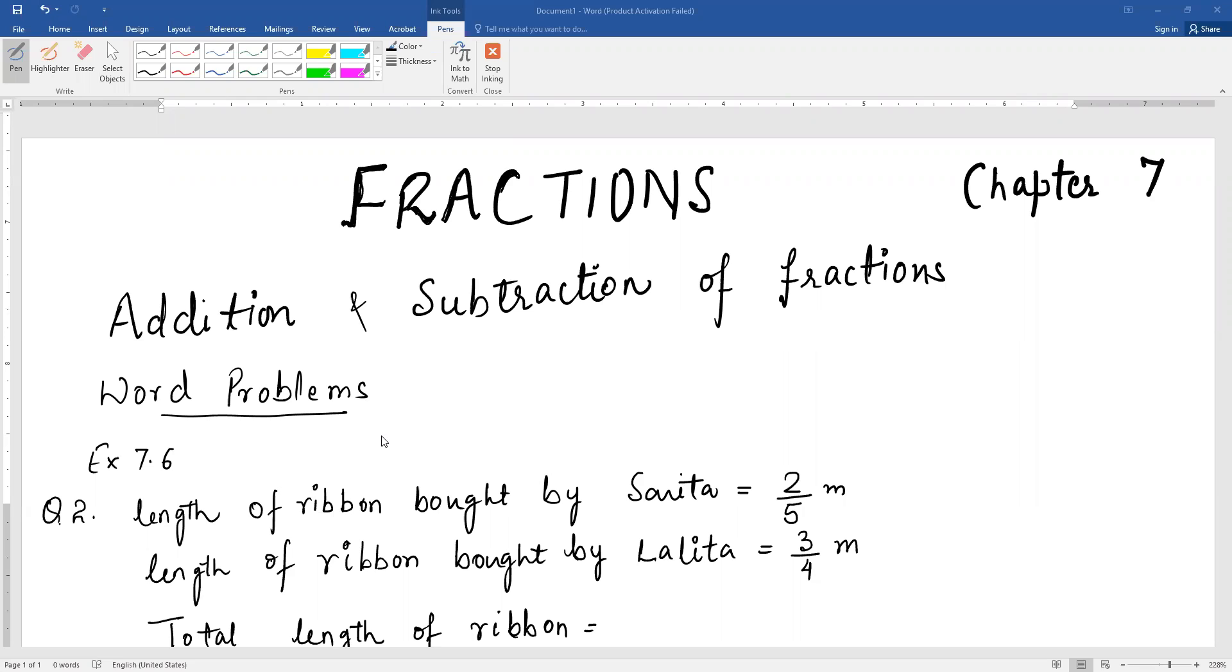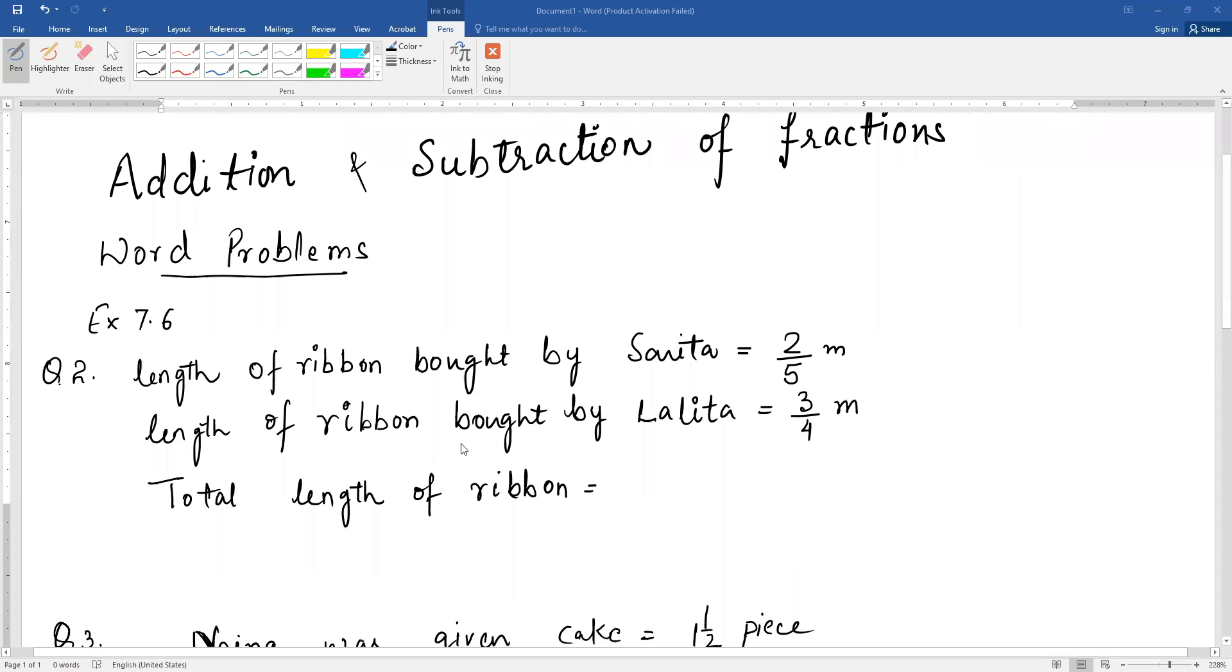In your textbook exercise 7.6, question number 2: Sarita bought 2 by 5 meter of ribbon and Lalita bought 3 by 4 meter of ribbon. What is the total length of ribbon? That means length of ribbon bought by Sarita is 2 by 5 meters and length of ribbon bought by Lalita is 3 by 4 meters.